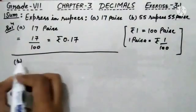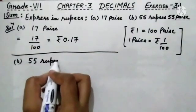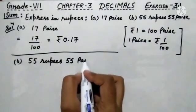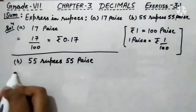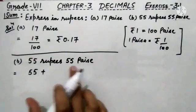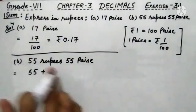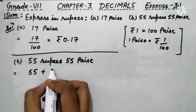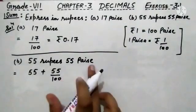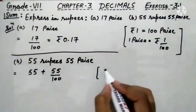Now in the B part, we have to convert 55 rupees and 55 paise into rupees only. 55 rupees is already given. So we have to convert 55 paise into rupees, just as we did for 17 paise. Here also, 55 paise divided by 100. This paise is converted into rupees — the reason is the same as in the above question.